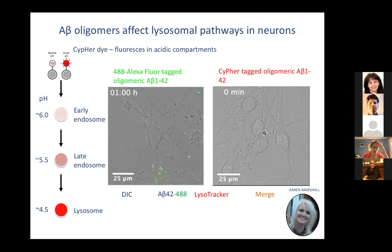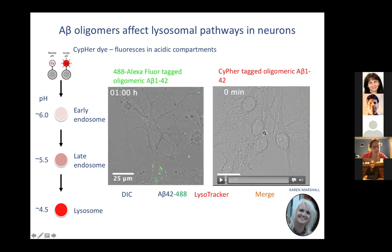It may not be that there's a single oligomeric species responsible for these mechanisms. We went on to look at these oligomers in more detail — not dityrosine cross-linked, just ordinary Abeta oligomers — to see what they might be doing. We wanted to look at their internalization and where they go when internalized into cells. We're following the lysosomal pathway in neurons, and to do that we developed tagging with a CYPHER dye, which is a pH-sensitive dye that will fluoresce in acidic compartments.